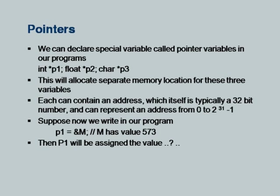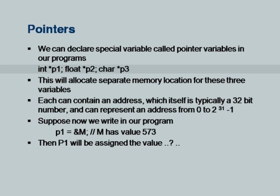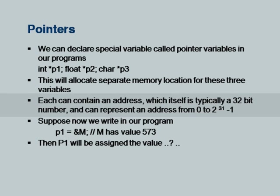The type association matters. If p1 is a pointer to integers, the addresses must be multiples of 4 since each integer address begins at 10000, next at 10004, 10008, etc. Whereas character variable addresses are at consecutive memory locations. So if you want to move the address from one value to the next, you move it by an increment commensurate with the space that a particular type takes. Therefore addresses have this binding to a type. p1, p2, p3 are special memory locations that contain a 32-bit address representing a value from 0 to 2^31 - 1.